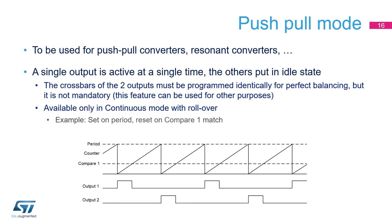The HR timer's push-pull mode simplifies the management of push-pull and resonant converters. The two outputs of the timing unit are alternatively enabled and put in idle state to maintain the balance between them. Two identical waveforms are programmed on output 1 and output 2, and the push-pull circuitry disables the outputs every two cycles out of phase so that the signals can be built using a single compare value. It is also possible to unbalance the signals and generate asymmetrical waveforms — for instance, a PWM using Compare 1 for Output 1 and Compare 2 for Output 2.